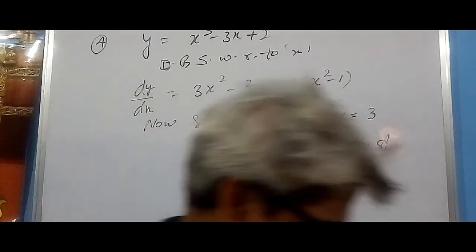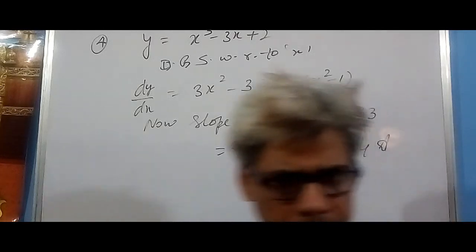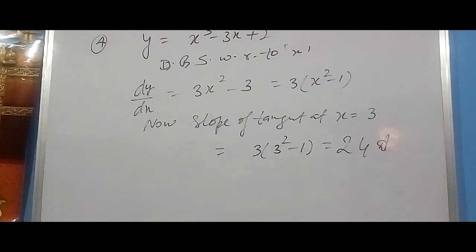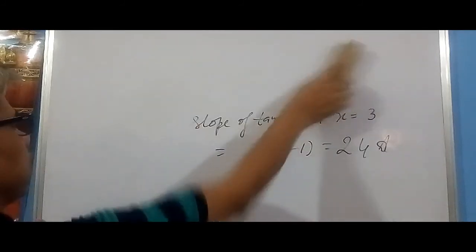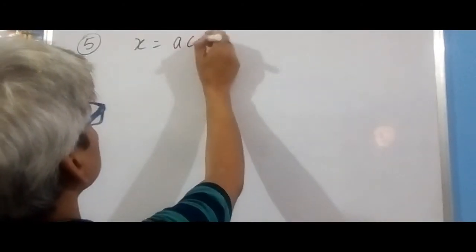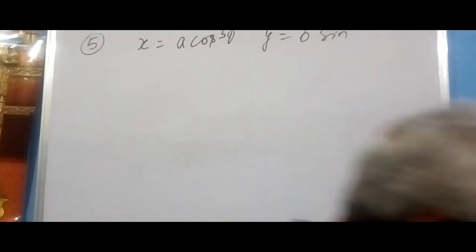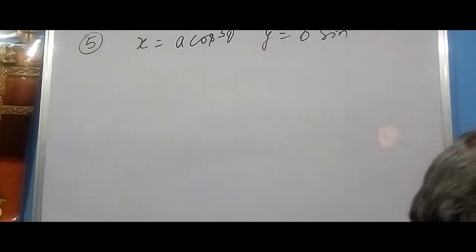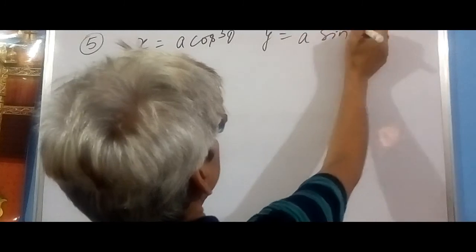Questions 4 and 5 are easy. In question 6, we have to find the equation of normal. For equation of normal, we need dx/dy. Basically, question 5 is a parametric function. Question 5 gives: x = a cos³θ and y = a sin³θ.